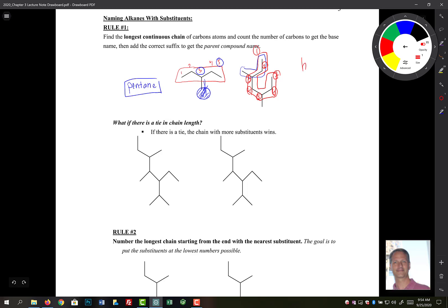So seven is hept, and there's no double bonds or anything else in here. So it's heptane. So our first goal again is to find this. Now, as we go through this, we'll kind of throw in some additional things to consider.